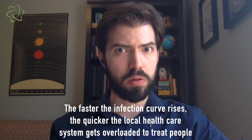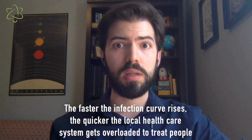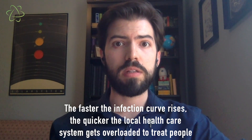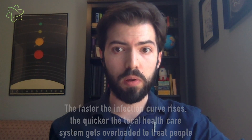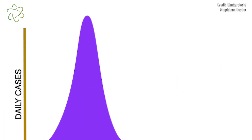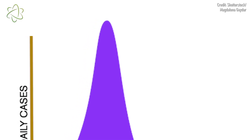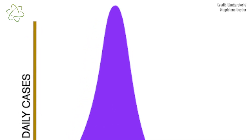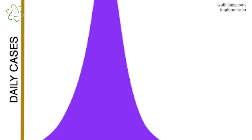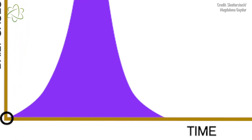In this scenario, hospitals are quickly overwhelmed. The sick can't receive the care they need, and the pandemic quickly spirals out of control. This curve skyrockets to a point where so much of the population has either been infected or killed by the virus that it quickly runs out of new hosts, and case numbers drop just as steeply as they rose. Even though this pandemic ends relatively quickly, it comes at the tremendous cost of many unnecessary deaths and likely a collapse of the healthcare system.